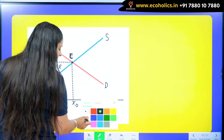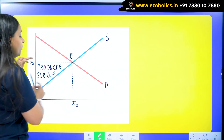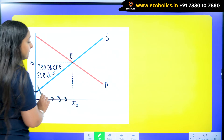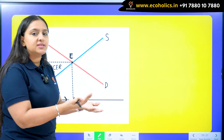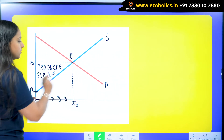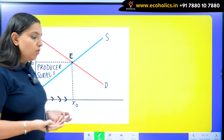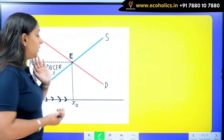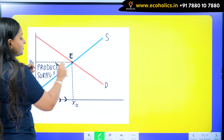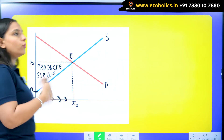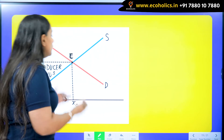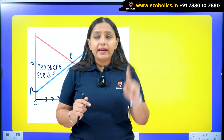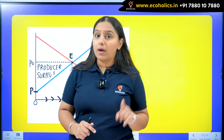The reason this triangle is the producer surplus is that he is willing to charge price P but is getting P₀ for X₀ units. As more and more units are sold, the price he wants to charge for every successive unit also increases. Finding consumer surplus using the triangle formula is simpler, but for the producer surplus triangle we need more steps.